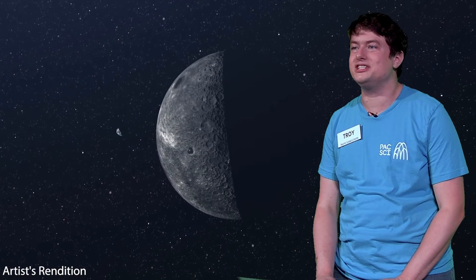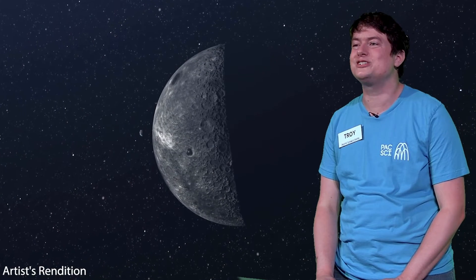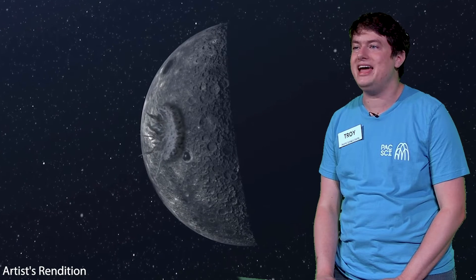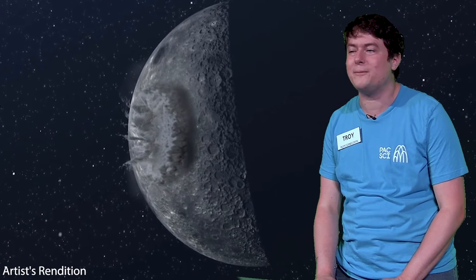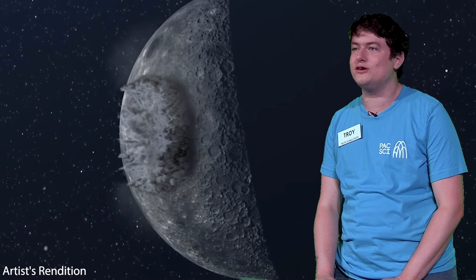Craters are marks left behind by collisions from space rocks called meteors. When a meteor hits the surface of a moon or planet, the energy of the impact can melt or vaporize the meteor itself, and the surface rocks are blasted away, leaving behind a circular crater shape. On Earth, our planet's thick atmosphere causes most meteors to lose their speed and burn up or break apart before they hit the surface.